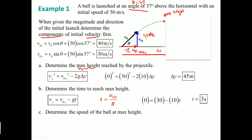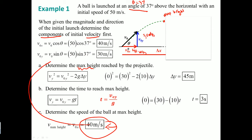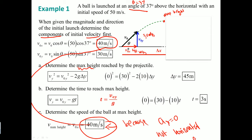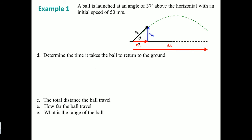Once you have T, you can find the speed at maximum height, which is 40 m/s — the horizontal velocity component. This never changes because ax equals zero; there is no horizontal acceleration. Remember: always find maximum height first, then time — that order is crucial.